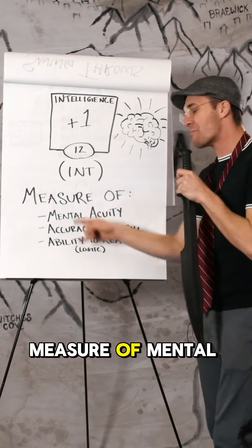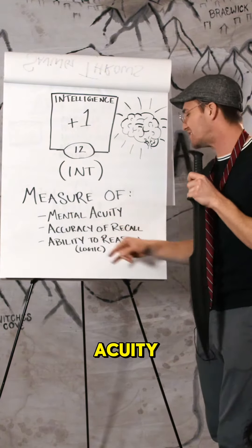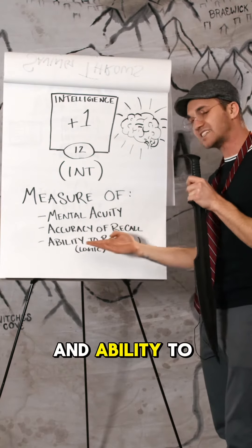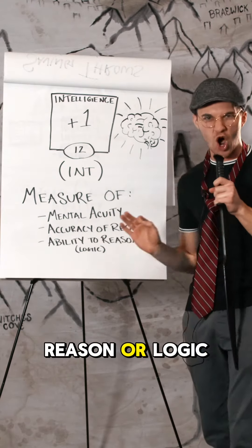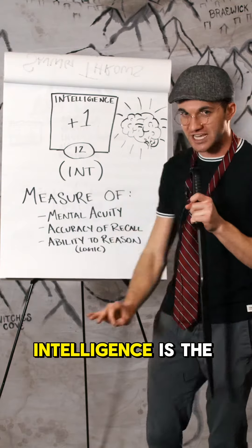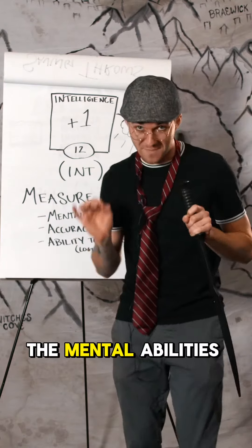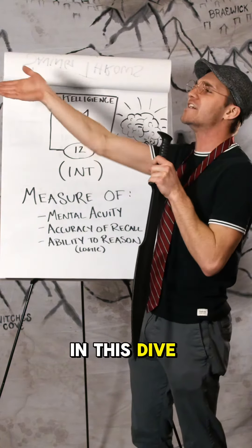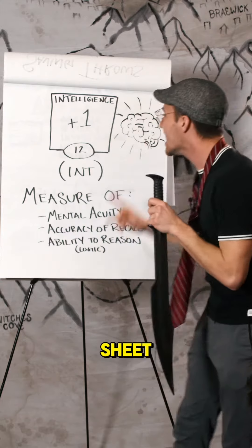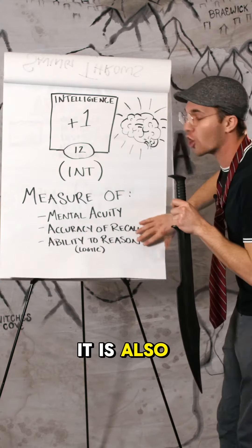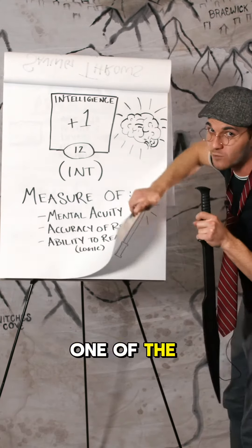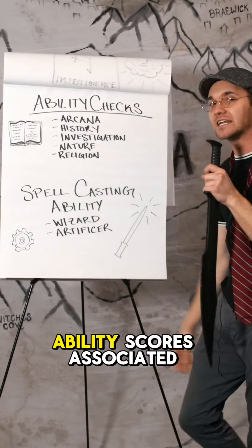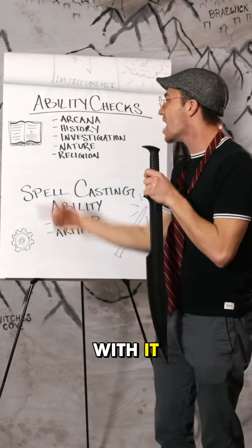Int is the measure of mental acuity, accuracy of recall, and ability to reason or logic. Intelligence is the first of the mental abilities that we have been talking about in this dive into the character sheet. It is also one of the more complicated ones — they have five ability scores associated with it.